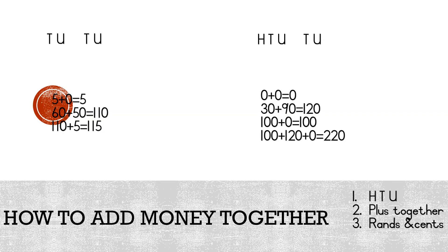How to add money together. Our first step is to add the hundreds, tens and units together. Put them in order. Step 2 is to add them together. And step 3, we must divide our answer into rands and cents.